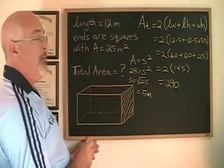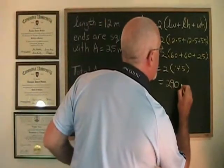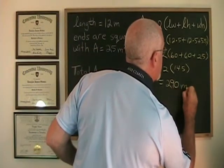Since the unit of measure was the meter all along, the area total is going to be equal to 290 meters squared.